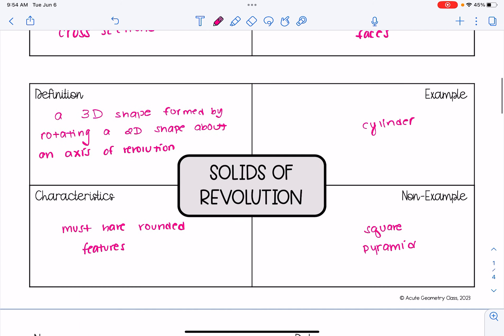First, let's introduce solids of revolution as well. A solid of revolution is a 3D shape that's formed by rotating a 2D shape about an axis of revolution. So now we're starting with a 2D shape, rotating it, and getting a 3D shape. It must have rounded features.